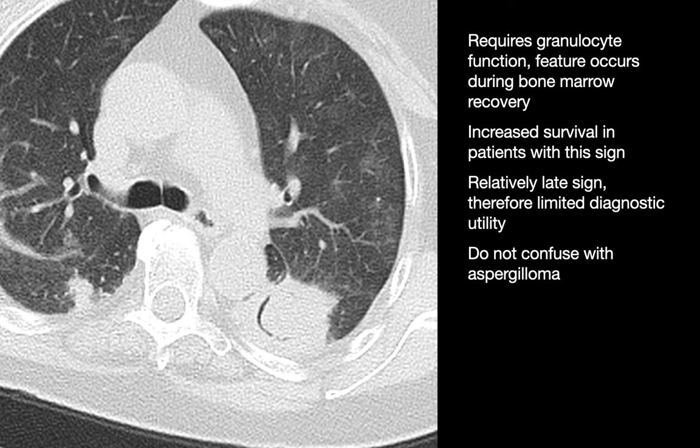Let's look at this one — identify this sign. On this image we see relatively geographic alternating regions with a lung print that looks a little blacker and then a little grayer. This is a mosaic attenuation pattern.